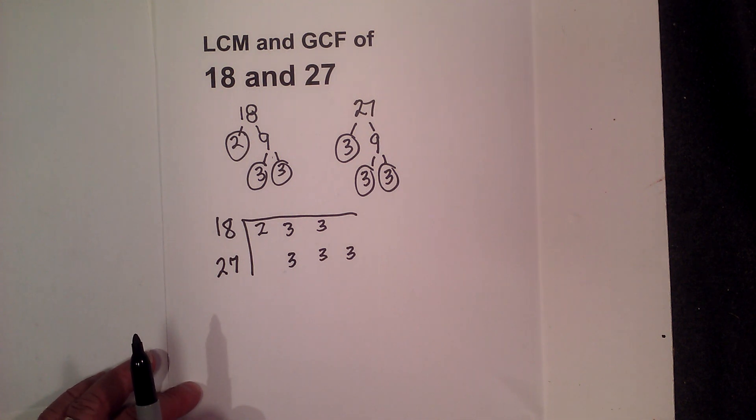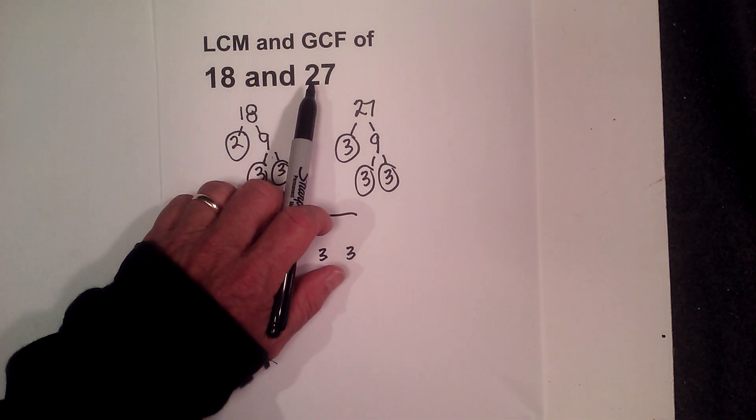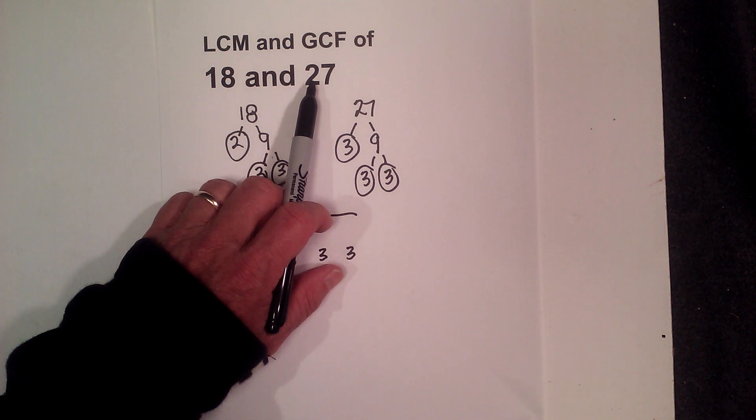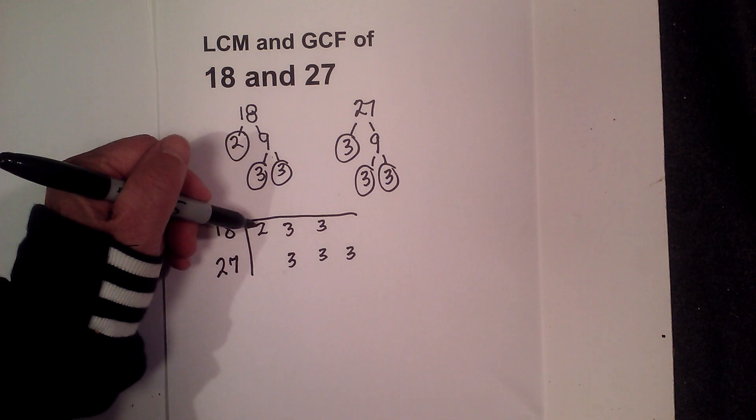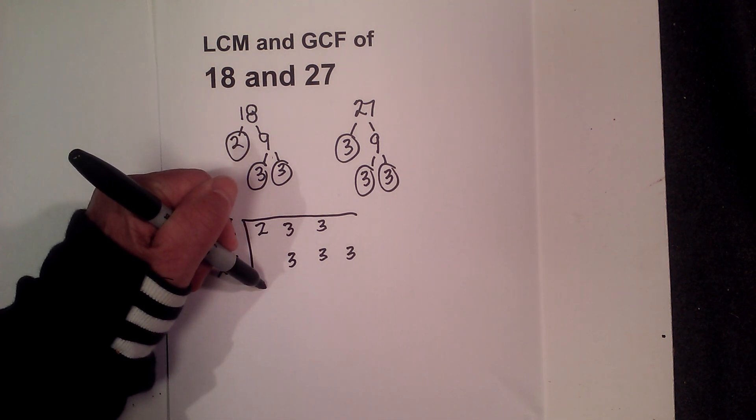Now for the Least Common Multiple, remember, as a minimum, it's got to be greater than the larger number because it's a multiple of these numbers. So what you do is you bring down all the prime numbers.